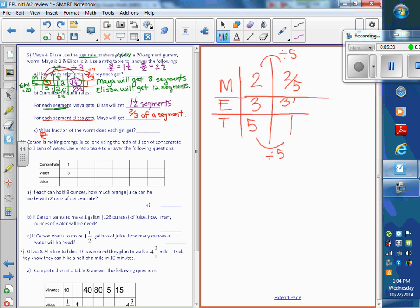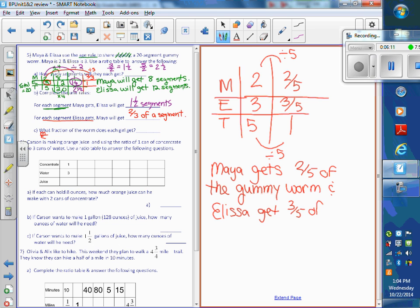So Maya gets 2 fifths of the gummy worm. And Alyssa gets 3 fifths. And Alyssa gets 3 fifths of the gummy worm.